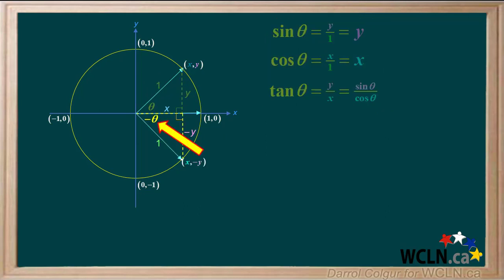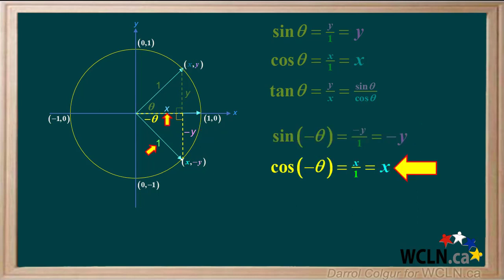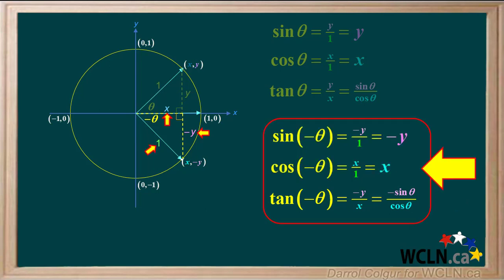Now we'll look at the negative angle theta. The sine of negative theta is negative y over 1, which is negative y. The cosine of negative theta is x over 1, which is positive x. And the tangent of negative theta is negative y over x, which is negative sine theta over cosine theta. Here is a summary of the values of sine, cosine, and tangent for angle negative theta.